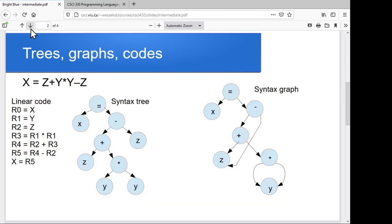We'll take a look at a linear code approach, a tree approach, and a graph approach to representing just a simple expression. We've got this expression in our source language that x is assigned z plus y times y minus z, and let's say we're using our usual associativity and precedence rules. So it's going to do the multiplication first, and then the addition, and then the subtraction.